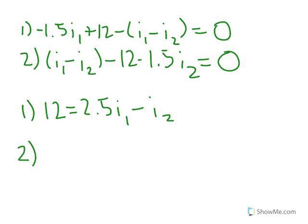Then we can rearrange this one. In this case 12 is on the left side, so I'll move it to the right. So 12 equals, we have I1. I1 is by itself. And then we have negative 2.5 I2. So these are our two equations that we will use to make our matrices.